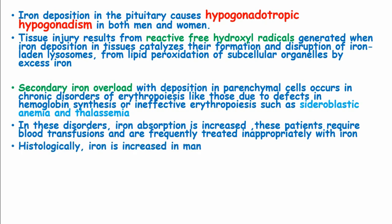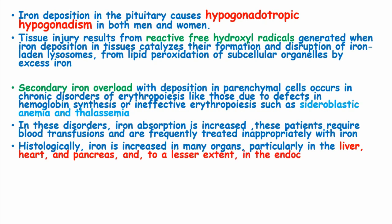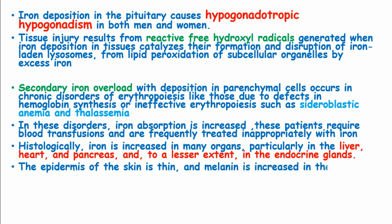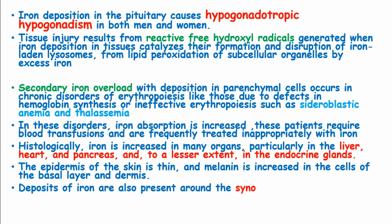Histologically, iron is increased in many organs, particularly the liver, heart, and pancreas, and to a lesser extent in the endocrine glands such as the pituitary gland. The epidermis of the skin is thin and melanin is increased in the cells of the basal layer and the dermis. Deposits of iron are present around the synovial lining of the joints, causing arthropathy.